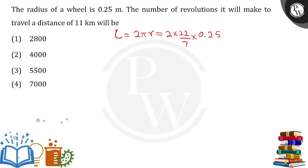This is the circumference. Now if we take one complete revolution, this much distance will be covered - the circumference will be covered in one complete revolution. The number of revolutions will mean to travel the distance of 11 kilometers.